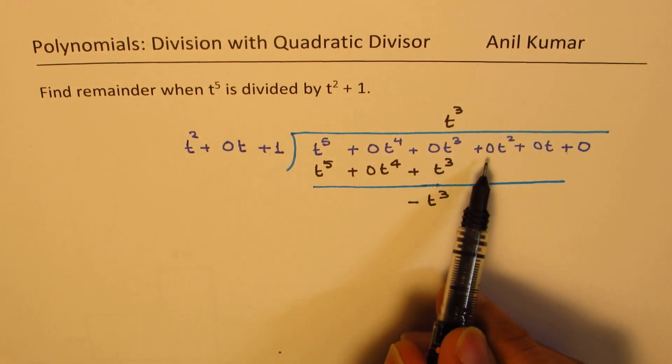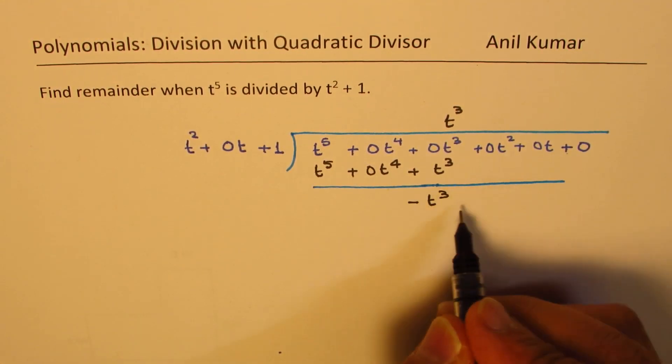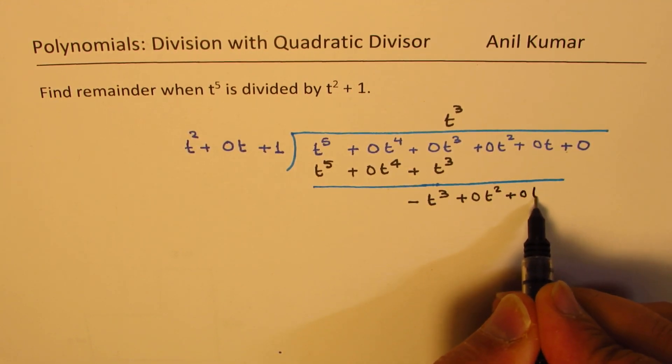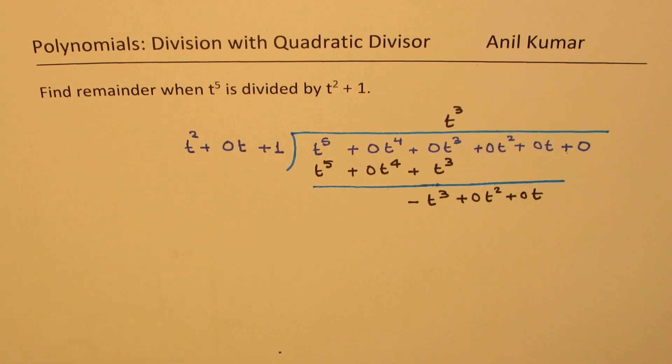Now, since there are 3 terms, we will take 2 of them down now. So we get plus 0t square plus 0t. These are actually the placeholders, right?